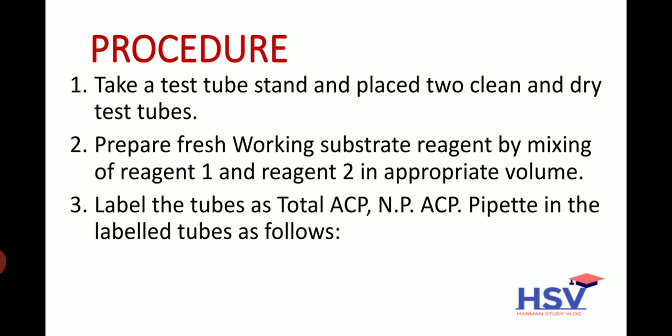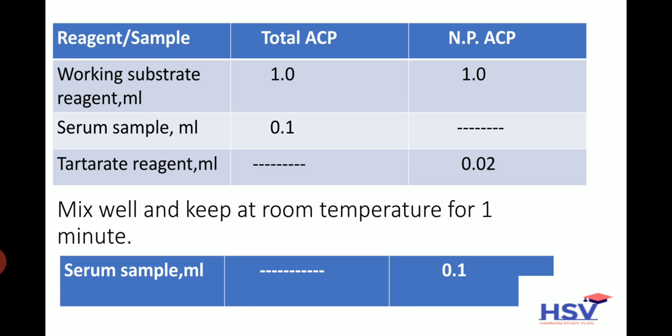For the procedure: place two clean and dry test tubes on a test tube stand. Prepare fresh working substrate reagent by mixing reagent 1 and reagent 2 in appropriate volume. Label the tubes as Total ACP and Non-Prostatic ACP. Add 1.0 ml working substrate reagent to both tubes, 0.1 ml serum sample to the Total ACP tube, and 0.02 ml tartrate reagent to the Non-Prostatic ACP tube. Mix well and keep at room temperature for 1 minute.